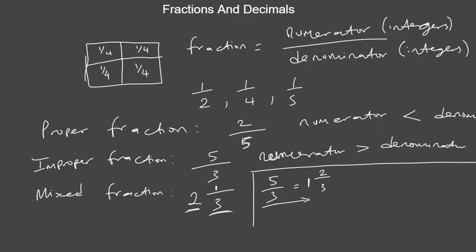You can also do the reverse: convert a mixed fraction to an improper fraction. If I have 2 and 1 over 3, I multiply 2 times 3 to get 6, then add the numerator 1 to get 7. So 2 and 1 over 3 equals 7 over 3. This is how you convert from a mixed fraction to an improper fraction.